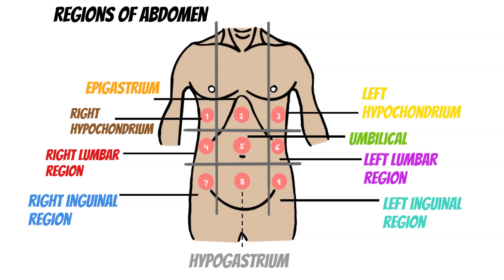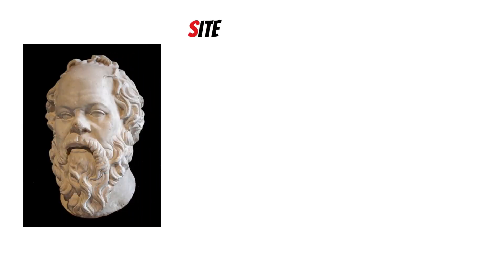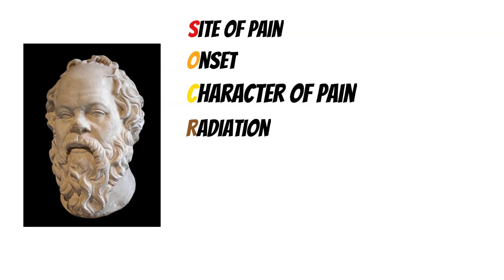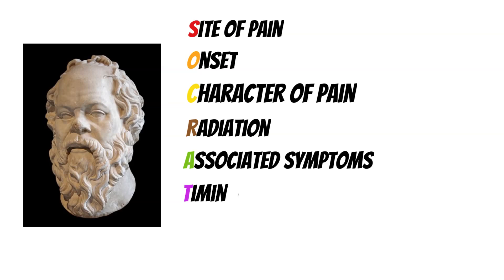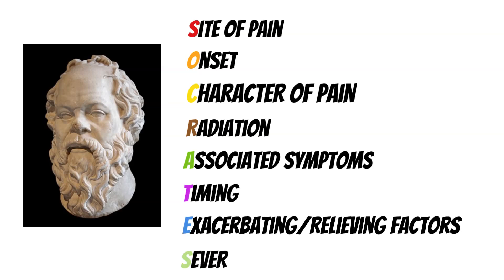There are multiple ways to categorize sections of the abdomen, and later in the video we'll get to a few more. When we say somebody has abdominal pain, we can say they have pain in the right inguinal region, for example. Sometimes the signs of abdominal pain may be unclear in certain groups — the elderly, children, or patients taking steroids. The main way to assess abdominal pain is SOCRATES: Site, Onset, Character, Radiation, Associated symptoms, Timing, Exacerbating factors, and Severity.